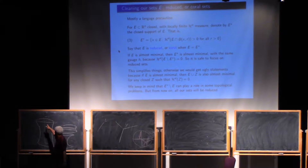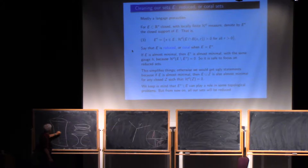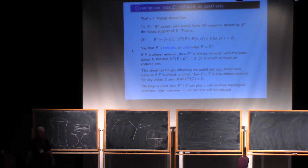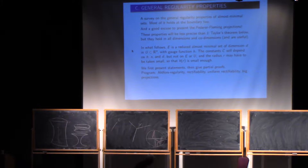For instance, here I will say that the union of those two disks is Ahlfors regular and satisfies some other properties, and I will not say anything about the wire. In fact, I drew the most beautiful wire I could find, but a set of dimension one like this is going to have exactly the same measure. From now on, I'm only looking at almost minimal sets that are reduced, and I'll explain a number of regularity results — low regularity — for those things.